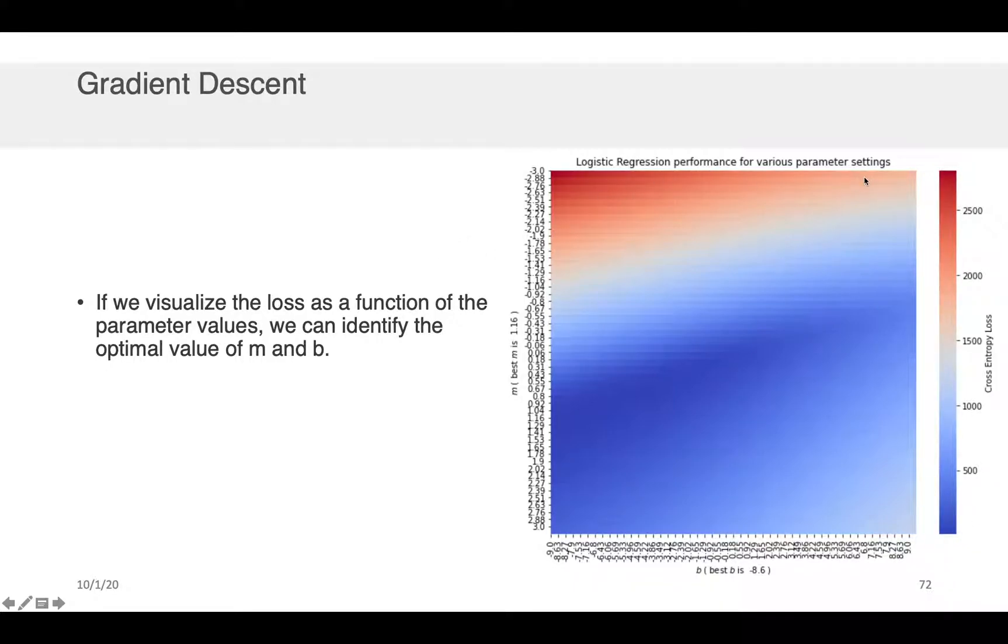Okay, so if I just kind of glance at this map here, you can identify the optimal value of m and b somewhere right around here. It looks like this is where it sort of becomes the most dark blue and therefore the loss is the least.